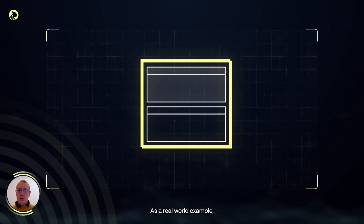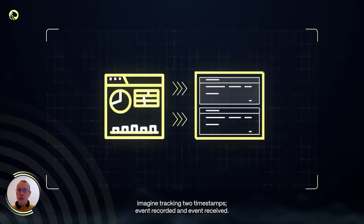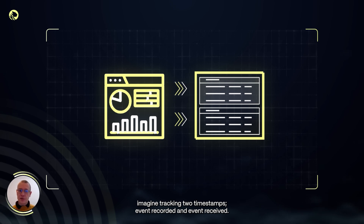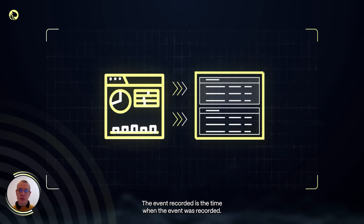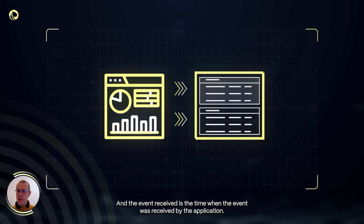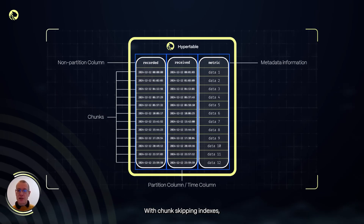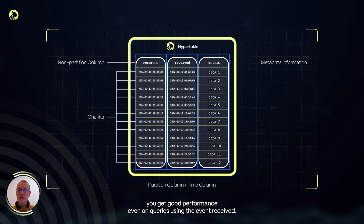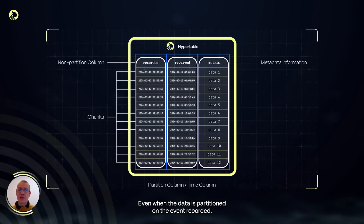As a real-world example, imagine tracking two timestamps: event_recorded and event_received. The event_recorded is the time when the event was recorded, and event_received is the time when the event was received by the application. With chunk skipping indexes, you get good performance even on queries using event_received, even when the data is partitioned on event_recorded.